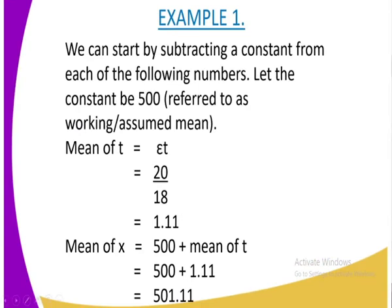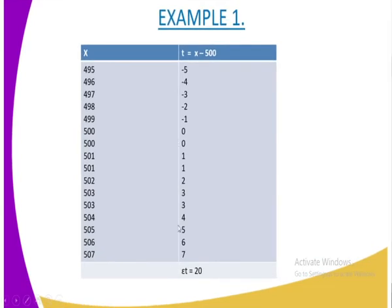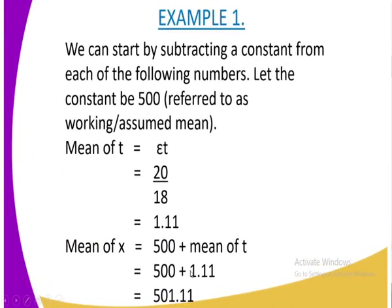From there, we are going to calculate, whereby we are going to get the mean of t. And remember that we have got an assumed mean of 500. So we are going to get summation of t, which we have got as 20, you divide by 18 to get 1.11. This 18 is the total frequency. The total frequency, we just count the number of figures that are there. Now to get our overall mean, we are going to get 500 plus the mean of t, that is 501.